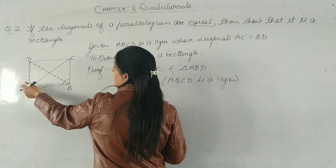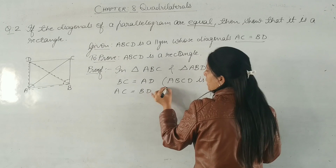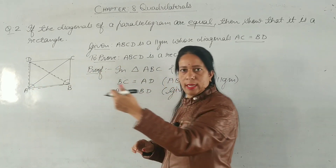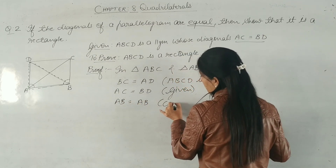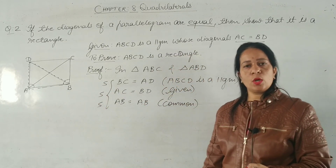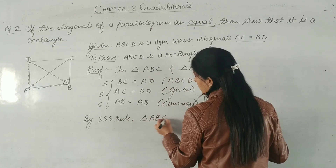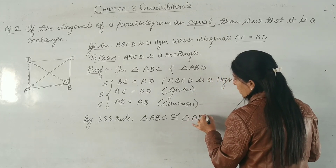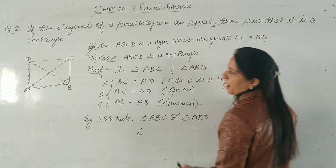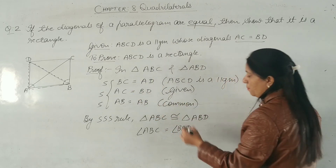The second condition: AC and BD are equal — given. The third condition: AB is equal to AB — common side. Therefore triangle ABC is congruent to triangle ABD. By CPCT we can say that angle ABC = angle BAD.